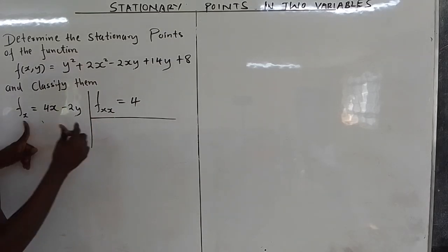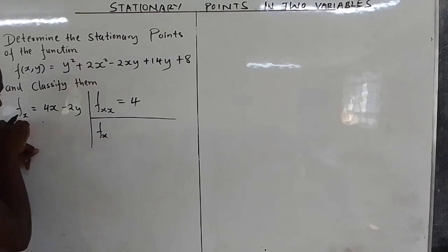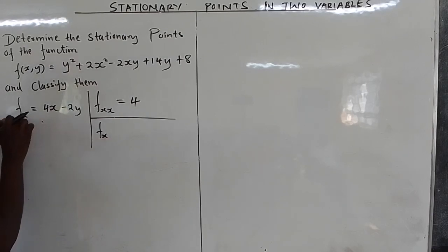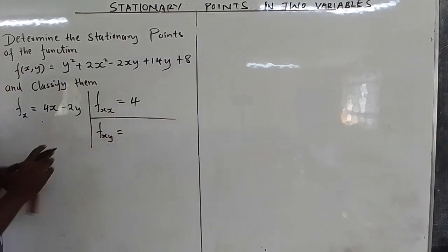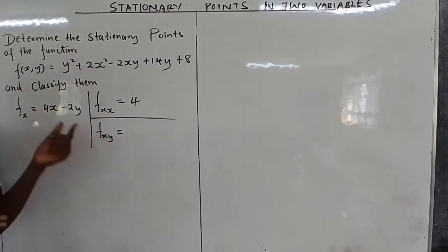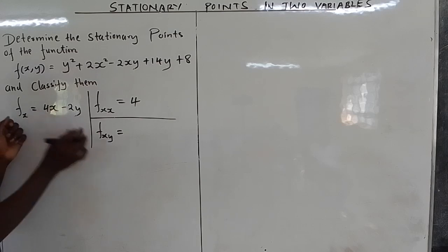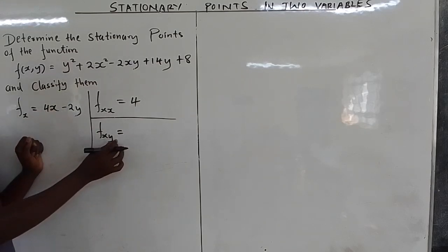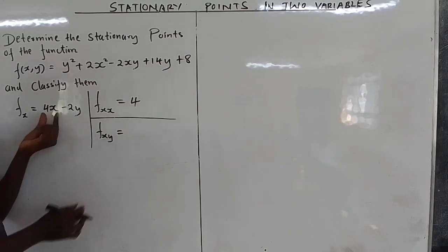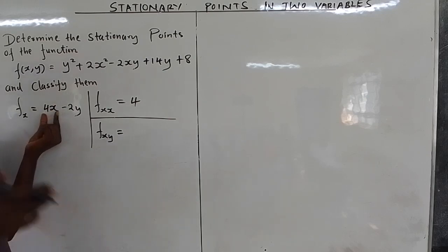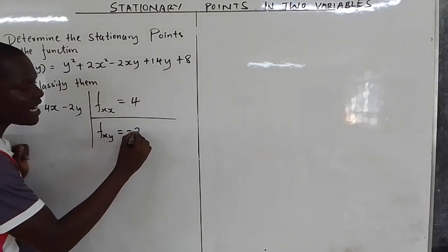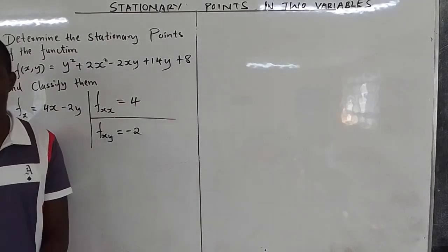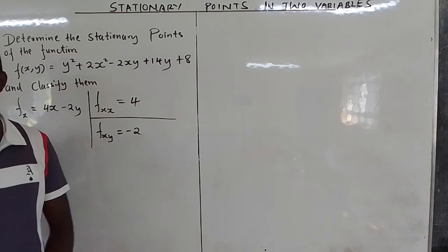Now we differentiate fx again, but this time partially with respect to y, to get fxy. Only y is now a variable — 4x is now a constant, giving zero. Differentiating -2y partially with respect to y gives -2. So fxy = -2.